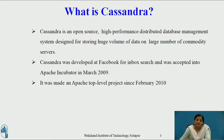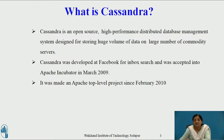Cassandra is an open source, high performance distributed database management system designed for storing huge volumes of data on a large number of commodity servers. Commodity servers are basically low-end desktop machines with common specifications. Cassandra was initiated at Facebook as a project for inbox search and was accepted into Apache Incubator in March 2009. It was made an Apache top-level project since February 2010, and since then Cassandra is known as Apache Cassandra.